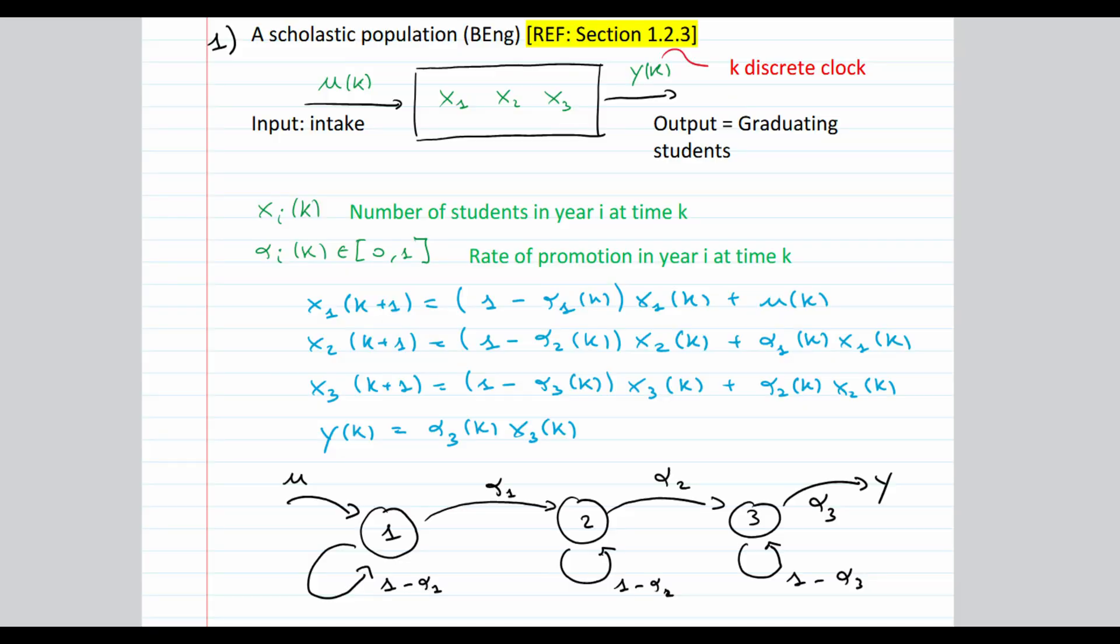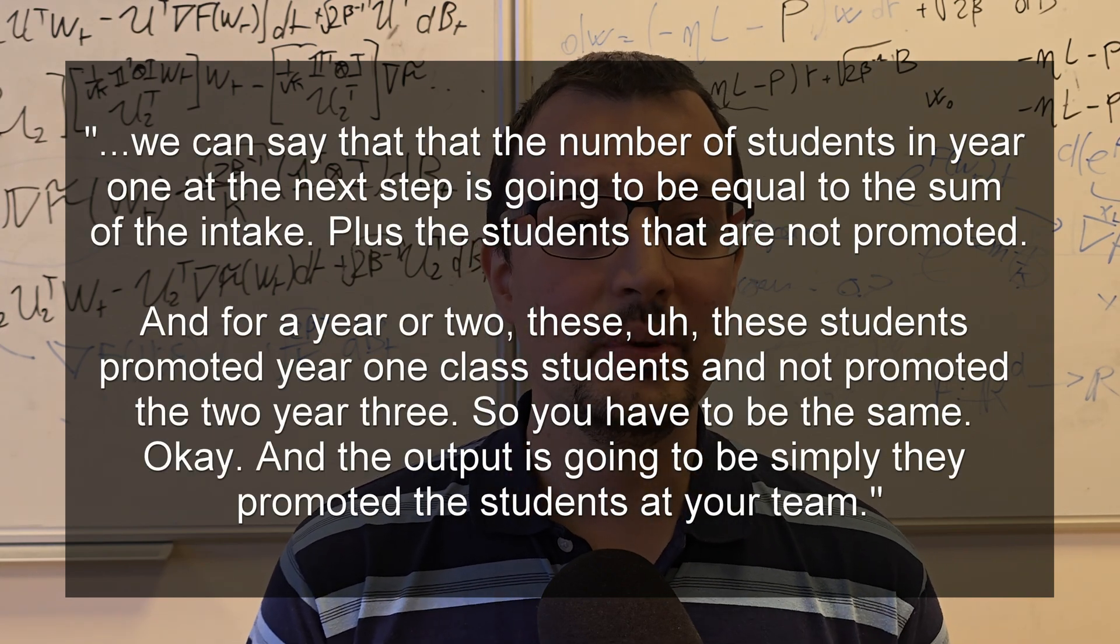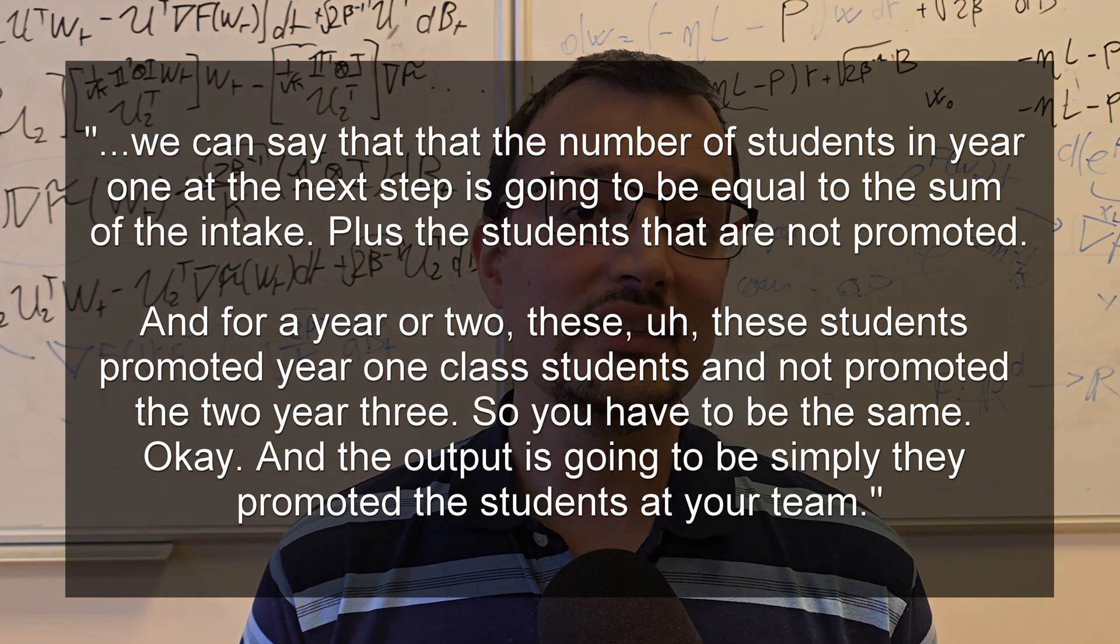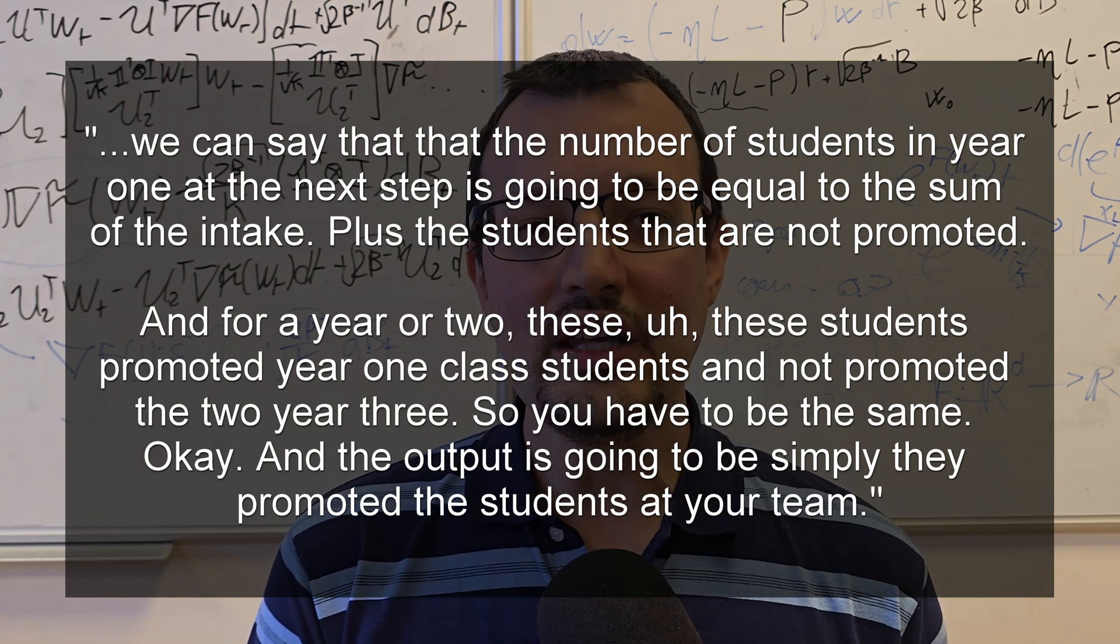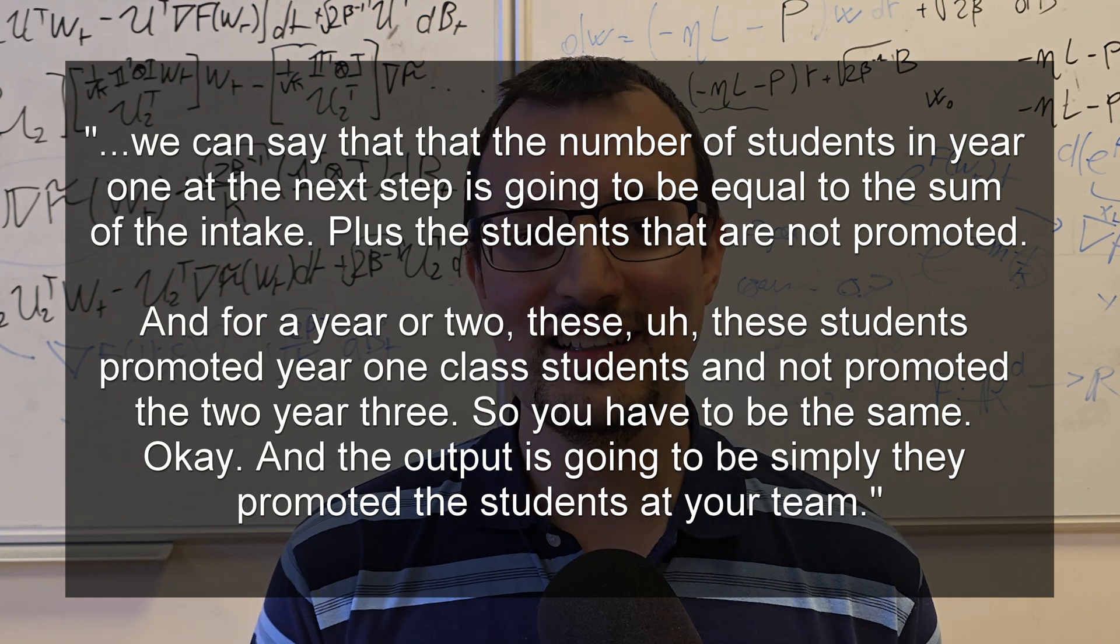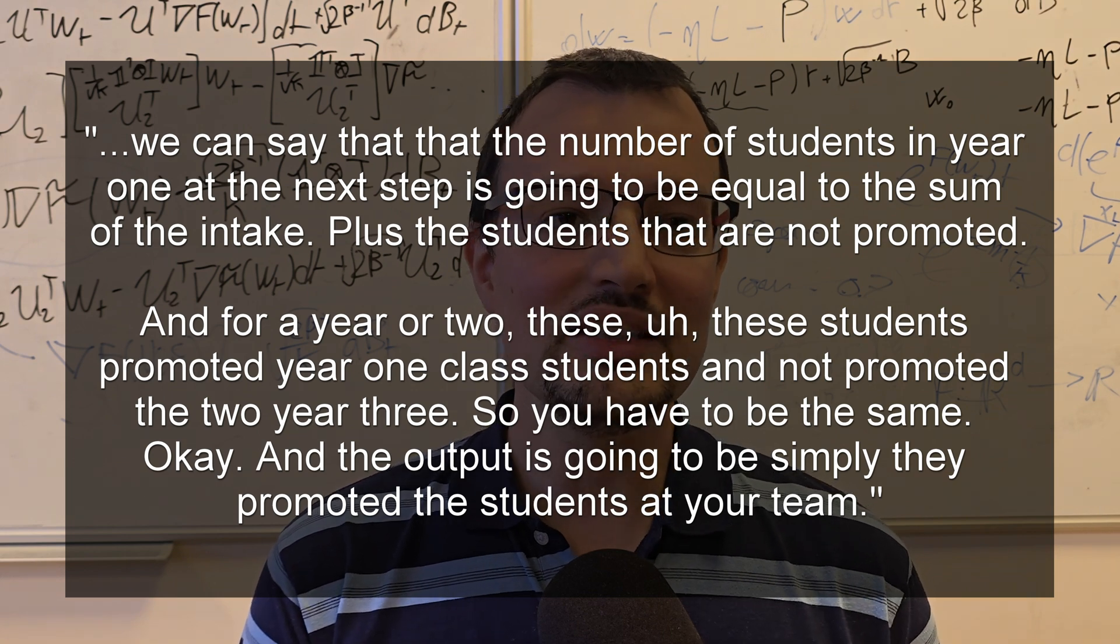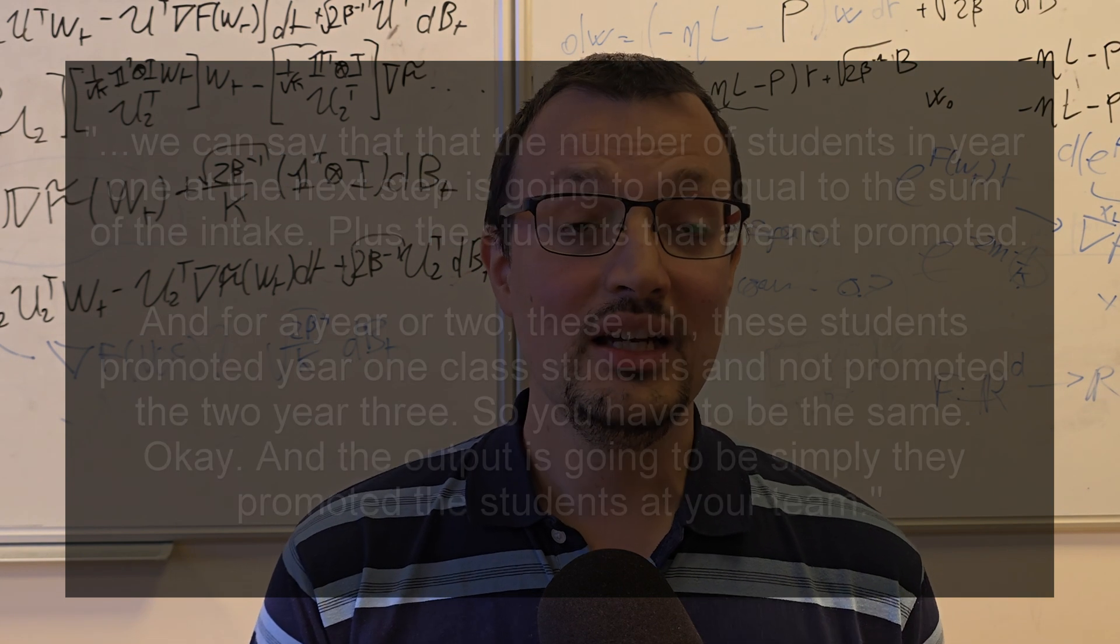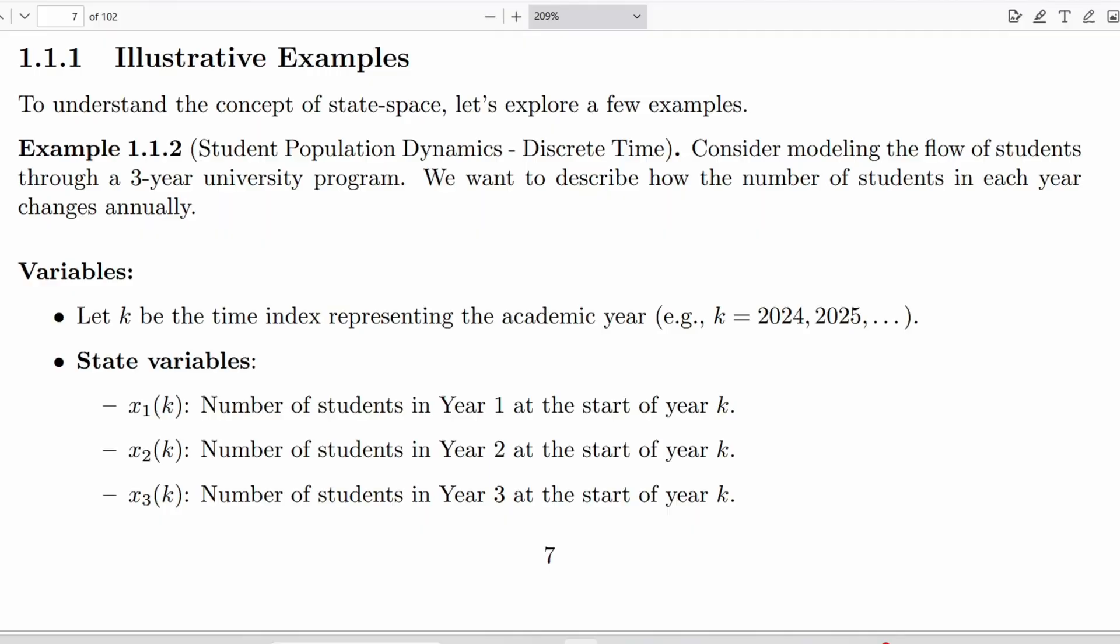Let's look at our first example. In my lecture I was introducing a simple discrete-time model for student population dynamics in a three-year degree, a model that I took from the handouts of Professor Astolfi. Let's look first at the automatically generated transcript of my speech, a part of it. We can say that the number of students in year one at the next step is going to be equal to the sum of the intake plus the students that are not promoted. Now, this part is understandable, but let's look at the second part. And for a year or two, these students promoted year one class students and not promoted the two year three, so you have to be the same. Okay, and the output is going to be simply they promoted the students at your team. This is a jumble, a complete mess which doesn't make any sense.